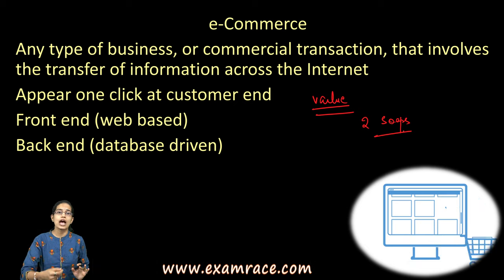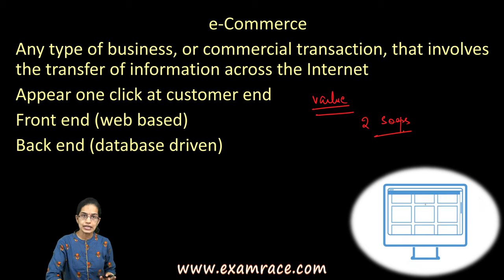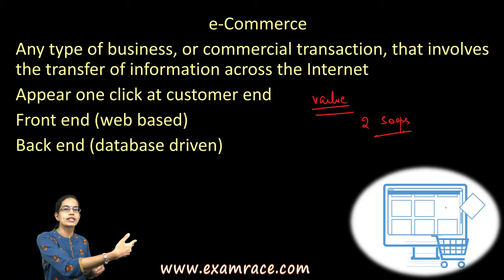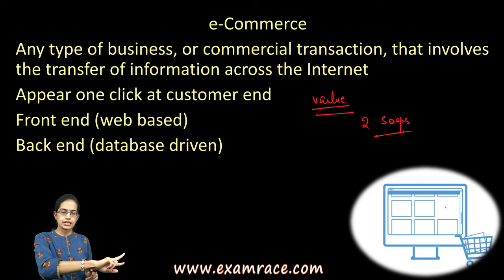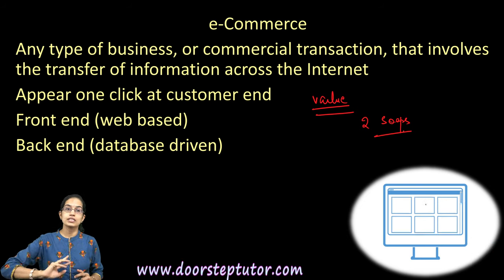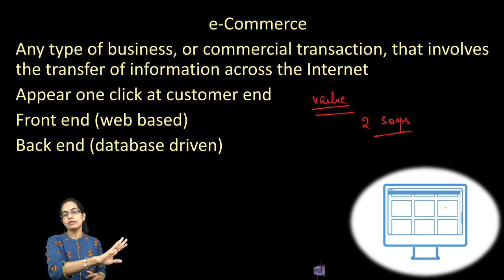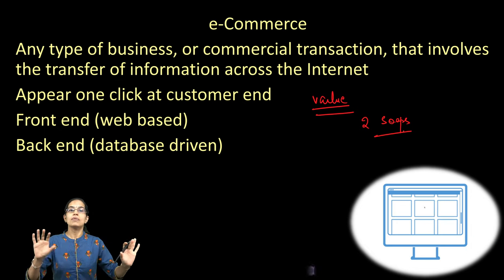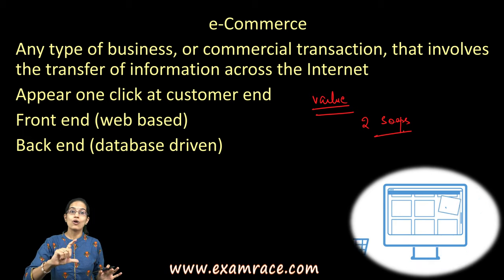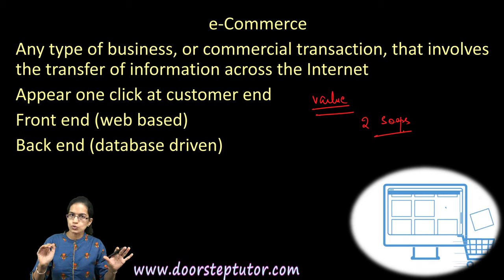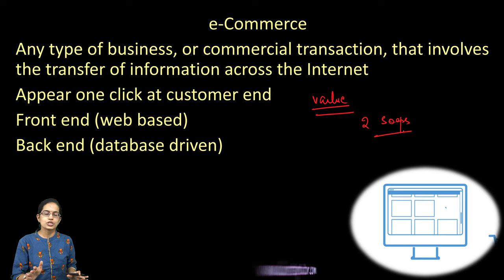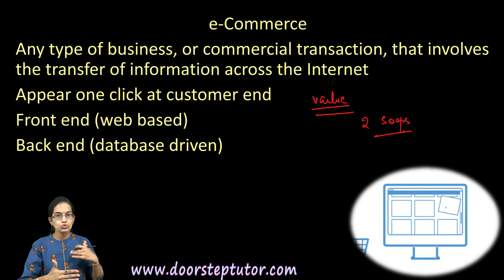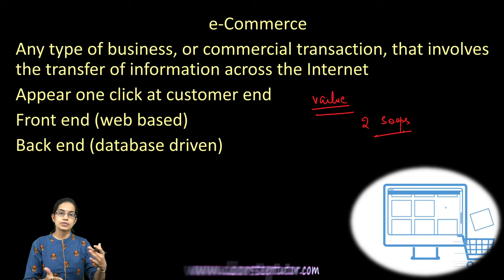As soon as an order is executed and payment is completed, those two articles would be reduced from the database. If the next customer wants to buy the same item and there is no more inventory, it would show the item as unavailable. This kind of smooth transition should occur. Supply chain is again paramount because through the supply chain the e-commerce website drives its business.